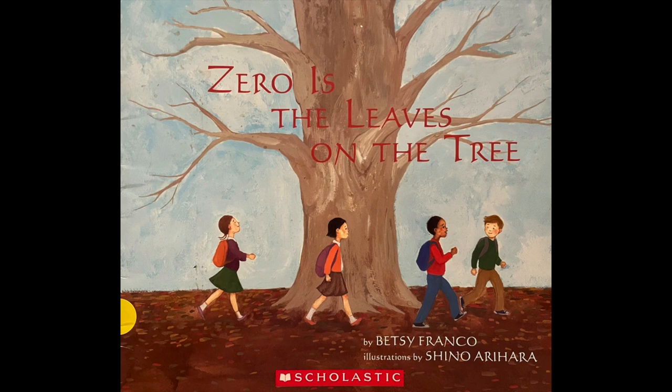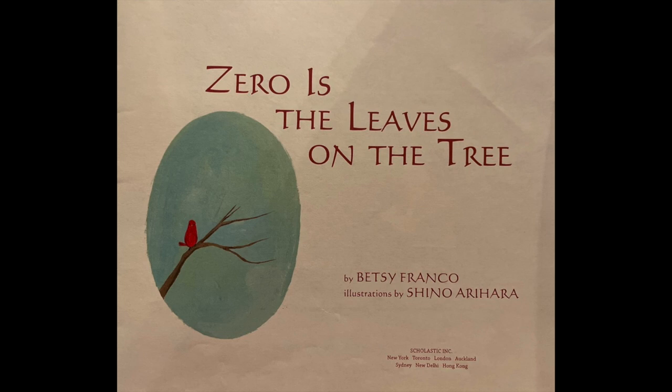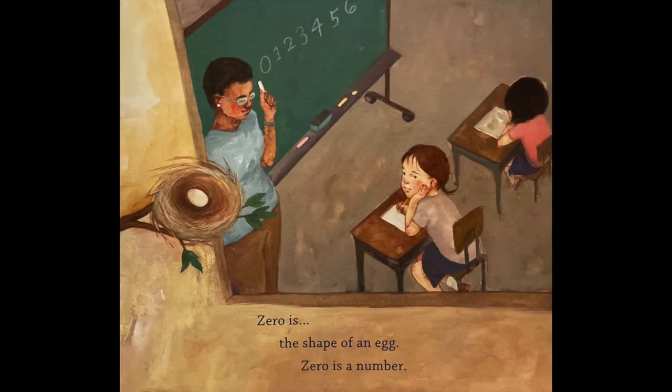Zero is The Leaves on the Tree by Betsy Franco, with illustrations by Shino Arihara. Zero is the shape of an egg. Zero is a number.